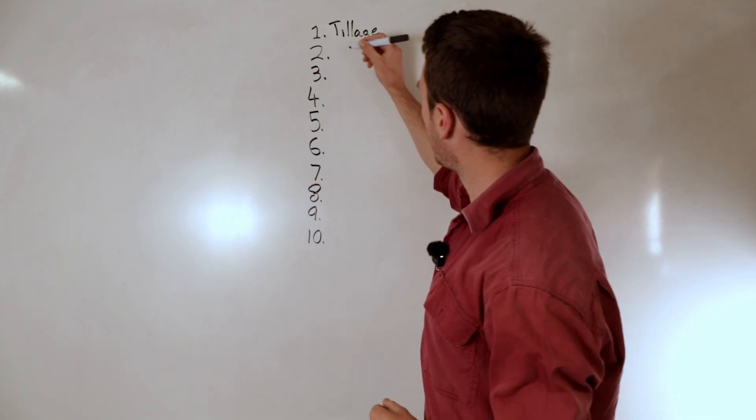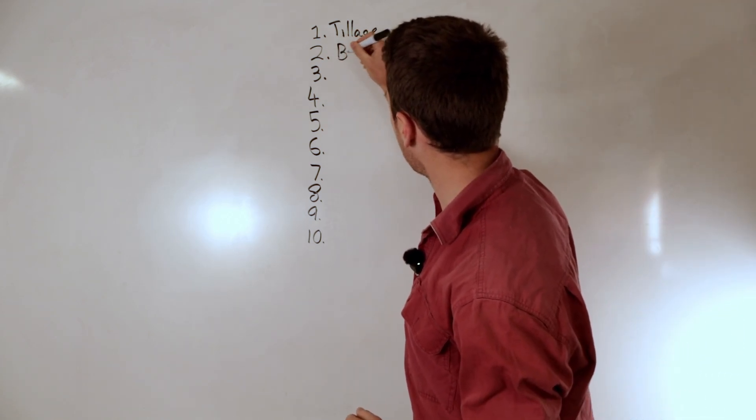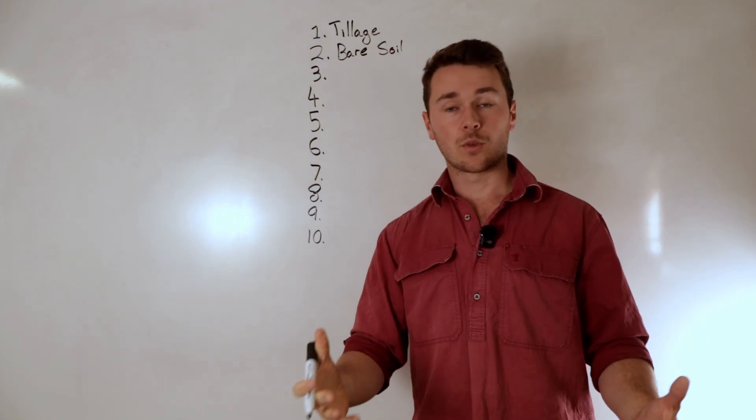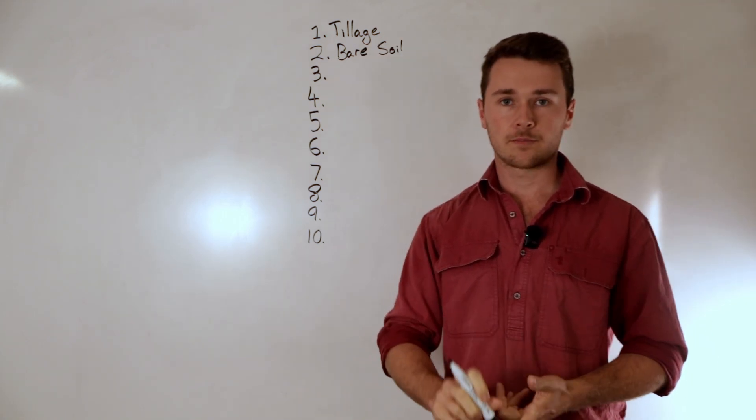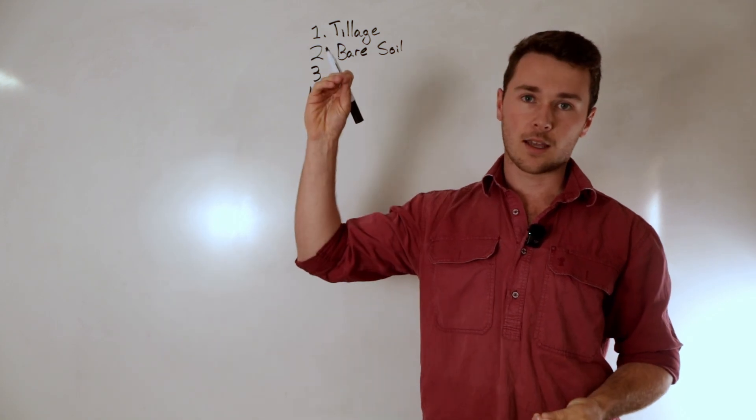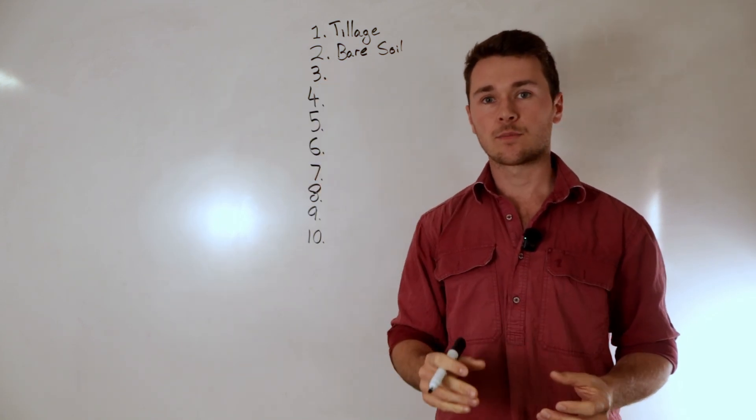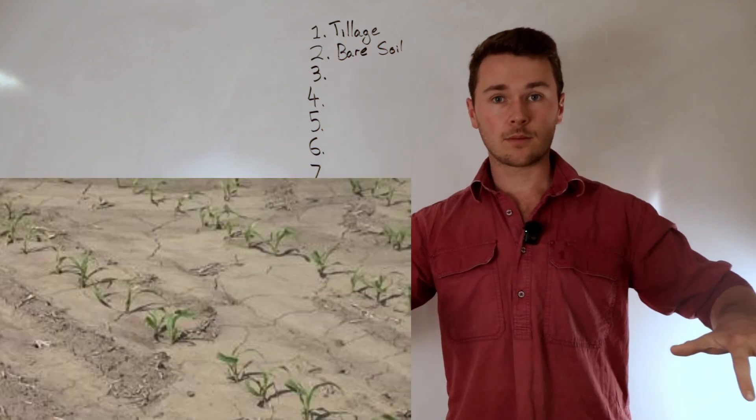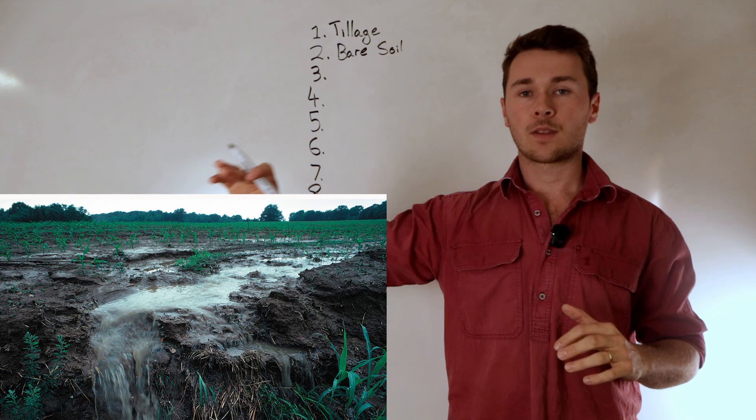The next practice I would use if I wanted to destroy some soil is to leave it bare. So bare soil is problematic in two ways. The first one is that it exposes the soil to a lot of erosion. So if we get a big storm event then a lot of that soil is exposed to water and you get a raindrop action, hit the soil surface, dislodge a lot of the soil particles.